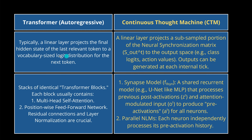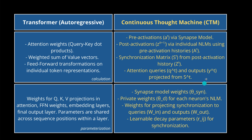In the classical transformer, a linear layer projects the final hidden state to a vocabulary logit distribution. In the CTM, a linear layer projects a subsampled portion of the neural synchronization matrix to the output space, and output can be generated at each internal tick. The system is more complicated — more dimensions, more dynamic evolution — but honestly I'm not sure I fully understand all the dependencies between the new matrix calculation, the new dimension, and their interactions with cross-attention, pre-activations via the synapse model, post-activations, the synchronization matrix, attention queries, projected outputs, and the dk parameter for synchronization.